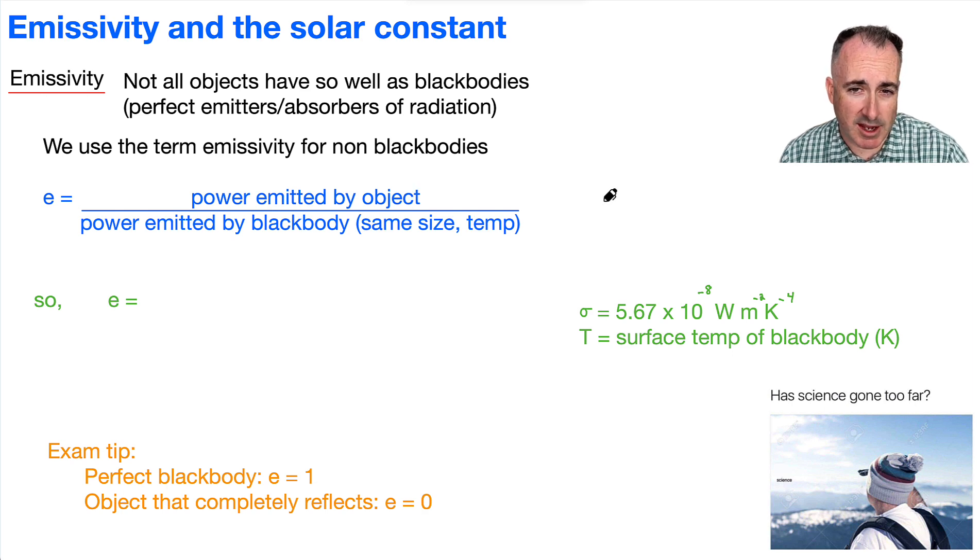So we're basically saying what the power is divided by what the power of a black body would be. And if you remember from your equations for black bodies, do you remember what the power of a black body is? Well, we wrote L, it was a luminosity, but we can write it as a power here. It was sigma times a times t to the power of four. And now this one right here, power emitted by the object, that'll just be a p.